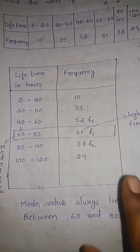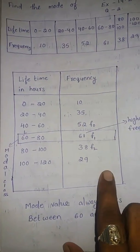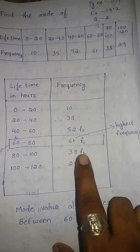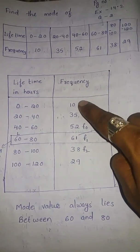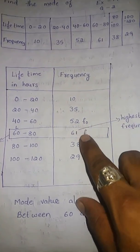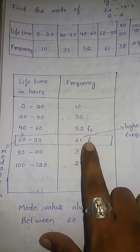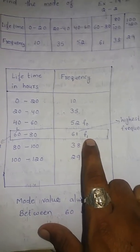In mode these two steps are sufficient to calculate the mode. First you check highest frequency. Here 10, 35, 52, and the highest is 61. 61 is the highest frequency.